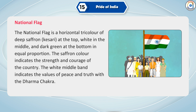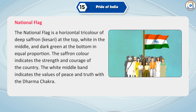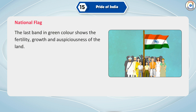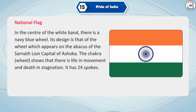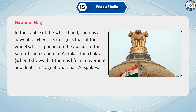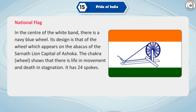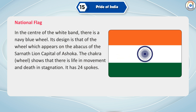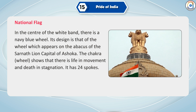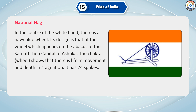The national flag is a horizontal tricolour of deep saffron (kesari) at the top, white in the middle and dark green at the bottom in equal proportion. The saffron colour indicates the strength and courage of the country. The white middle band indicates the values of peace and truth with the dharma chakra. The last band in green colour shows the fertility, growth and auspiciousness of the land. In the centre of the white band, there is a navy blue wheel. Its design is that of the wheel which appears on the abacus of the Sarnath lion capital of Ashoka. The chakra (wheel) shows that there is life in movement and death in stagnation.